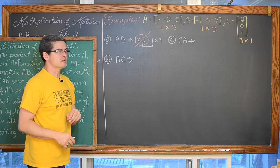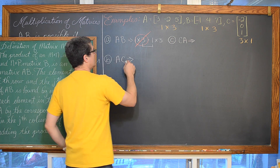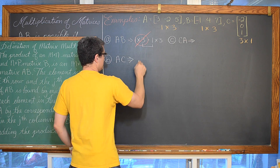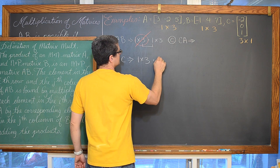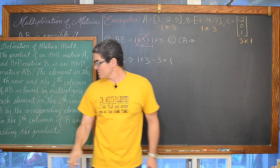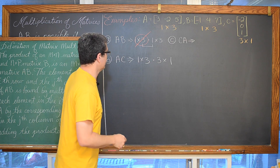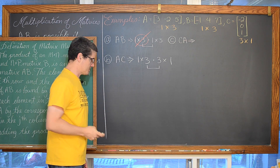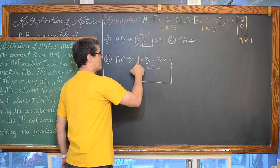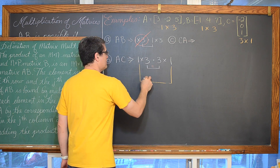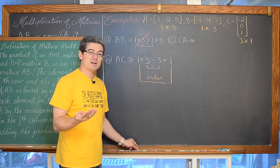In part B, we are going to take matrix A and multiply it by matrix C. A is a 1 by 3 matrix and C is a 3 by 1 matrix. We do have the number of columns in the first matrix equal to the number of rows in the second matrix. The number of rows in the first and columns in the second gives us our new order — when we get done, we are going to have a 1 by 1 matrix.